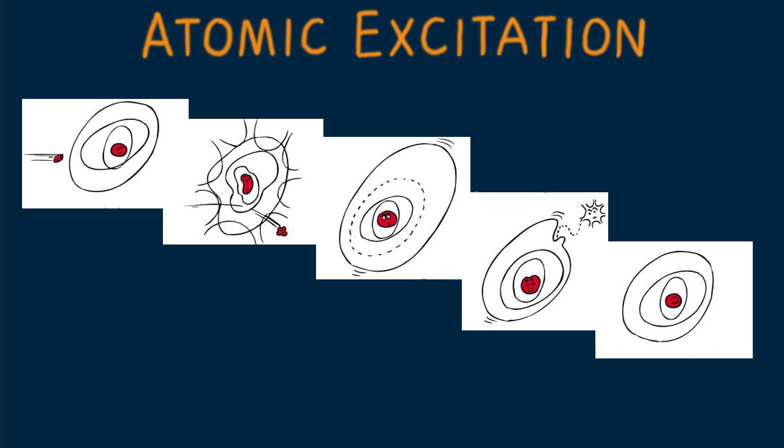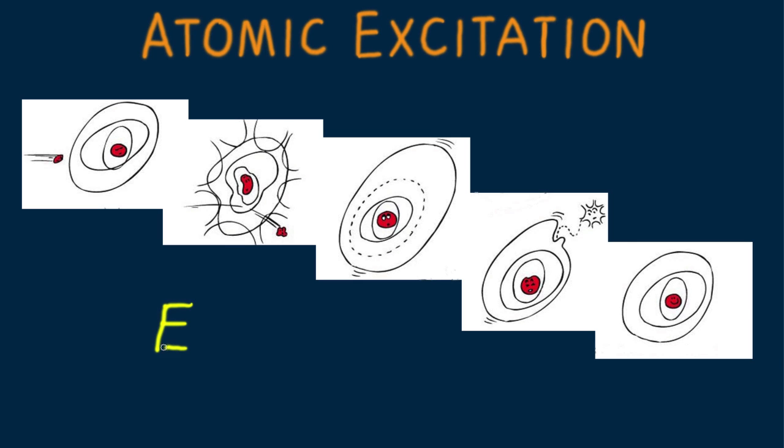The frequency of the photon is directly proportional to its energy. In shorthand notation, E proportional to F. When the proportionality constant H is introduced, this becomes the exact equation E equals HF, where H is Planck's constant, which we'll return to in later lessons.